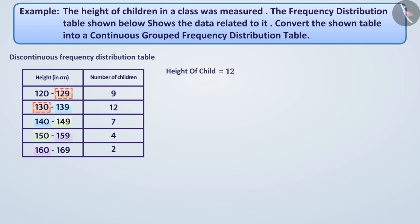Suppose the height of a child is 129.5 cm, then in which class interval will it be included in the table? Think. Let us tell. Since 129.5 is greater than 129, it cannot be included in the class interval 120 to 129. Similarly, 129.5 is smaller than 130, so it cannot be included in the class interval 130 to 139. Thus, this number cannot be included in any class interval.